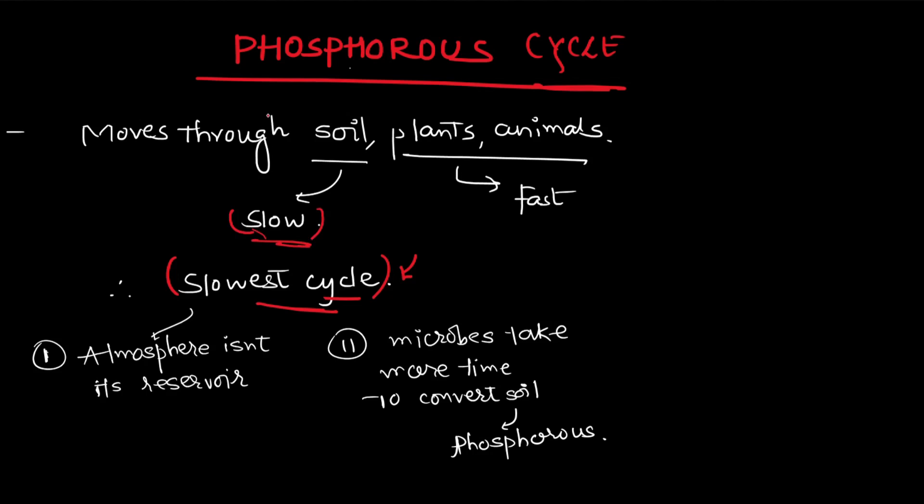The phosphorus cycle is said to be the slowest cycle. The reason is that unlike the carbon cycle and nitrogen cycle, which take up carbon and nitrogen respectively from the atmosphere, the atmosphere is not the reservoir of phosphorus. Additionally, microbes take more time to convert soil constituents into phosphorus, which makes the cycle the slowest.